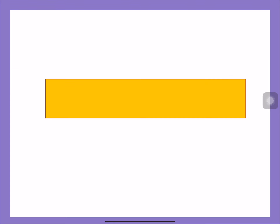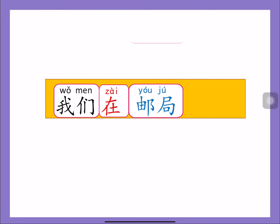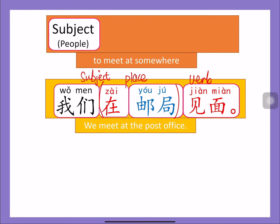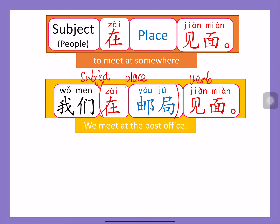看: 我们在邮局见面。 什么意思? We meet at the post office. 在邮局 means 'at the post office', 见面 means 'to meet'. It follows the same pattern: subject, place, verb. The place is always before the verb. So to say 'to meet at somewhere', you say: people + 在 + somewhere + 见面.